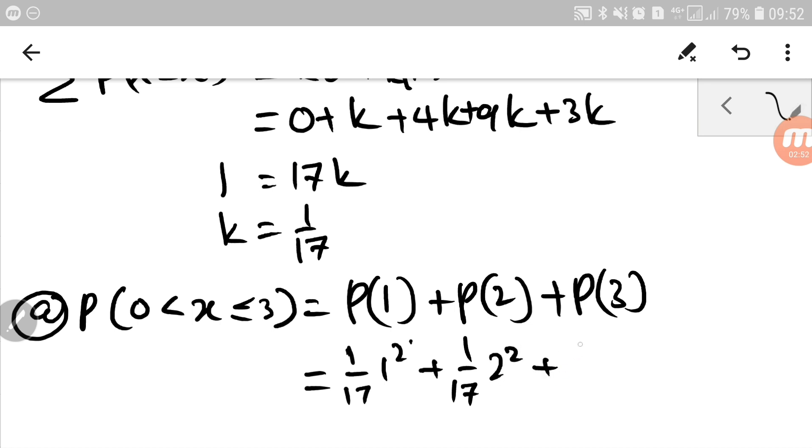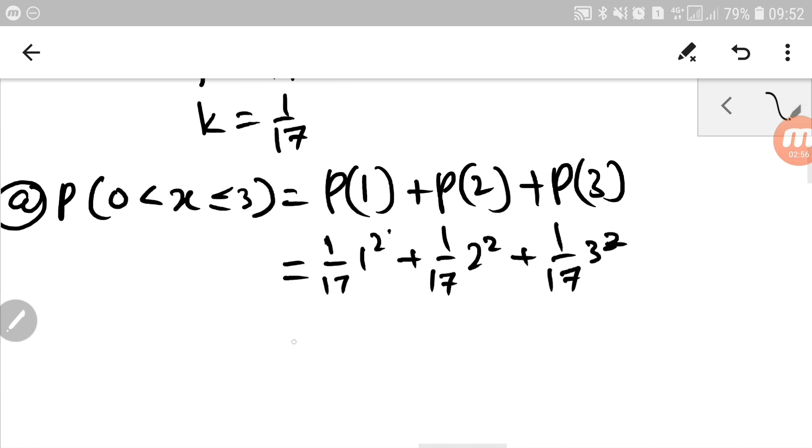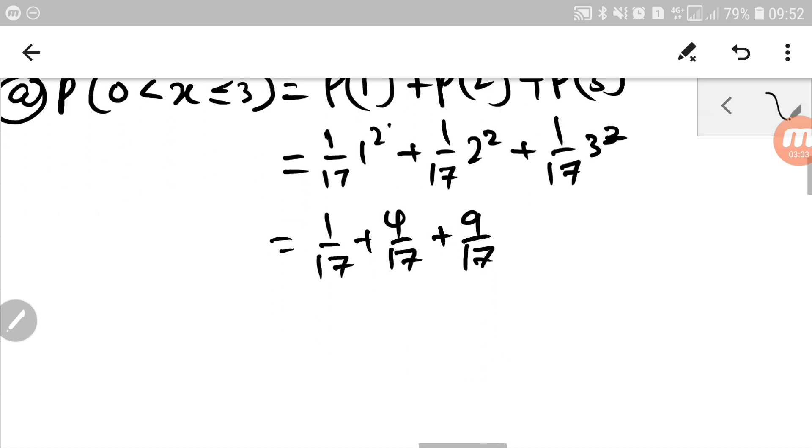plus 1 over 17, 2 square plus 1 over 17, 3 square. This is square. So 1 over 17 plus 4 over 17 plus 9 over 17.